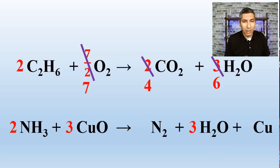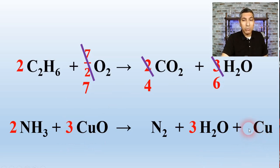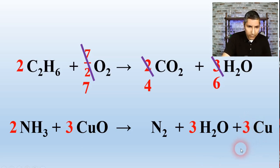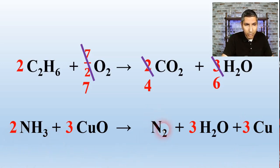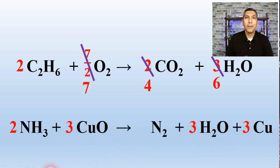Now the oxygens are balanced. Looking at the copper atoms: 3 on the left and only 1 on the right, so I multiply the copper on the right by 3. And now everything is balanced — 2 nitrogens on both sides, 6 hydrogens on both sides, 3 copper atoms on both sides, and 3 oxygen atoms on both sides. This is a balanced equation.